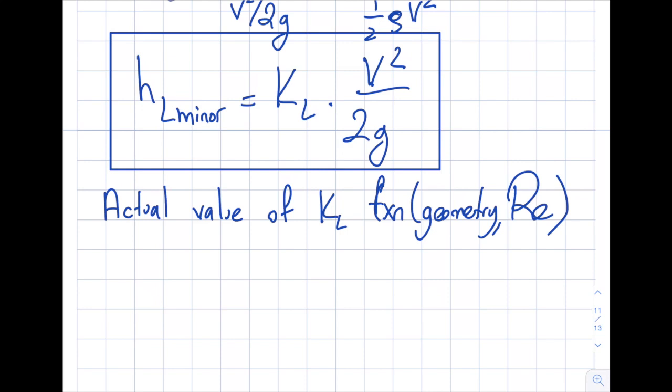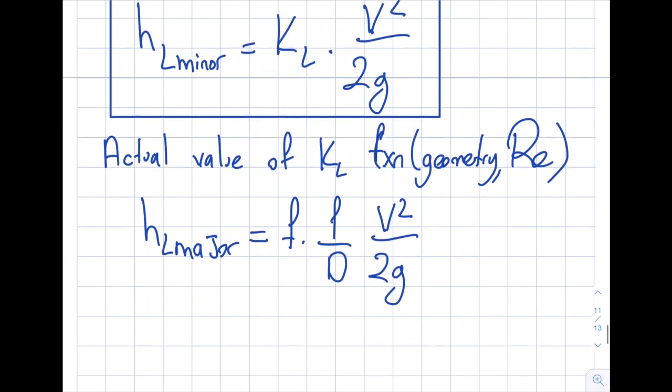But if I go back to the major losses, when I look at the h_L major, you will see that this is going to be defined like this: F L over D v squared over 2g. It's nice to have them on the same page for comparison purposes. You can say h_L major versus minor, v squared over 2g, v squared over 2g. So you can see that this F L over D is equal to K_L. So sometimes we specify that.